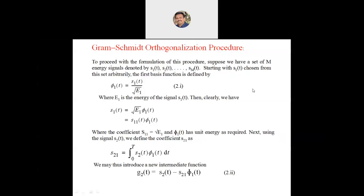Hello everyone. In this section we discuss the Gram-Schmidt orthogonalization procedure. To proceed with the formulation, suppose we have a set of m energy signals denoted by s1(t), s2(t), up to sm(t). Starting with s1(t) chosen from this set arbitrarily, the first basis function is defined by φ1(t) = s1(t) / √E1, where E1 is the energy of the signal s1(t).